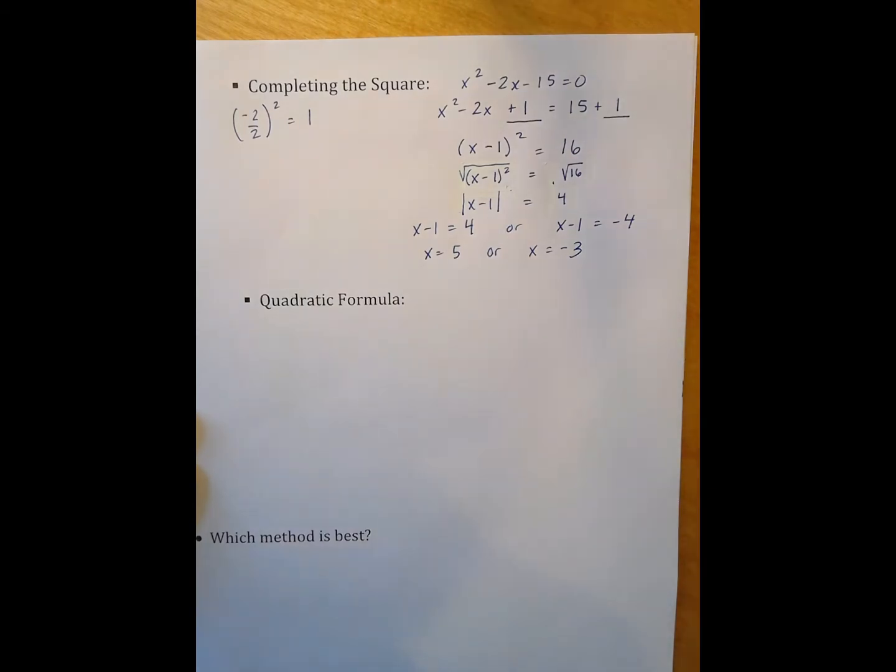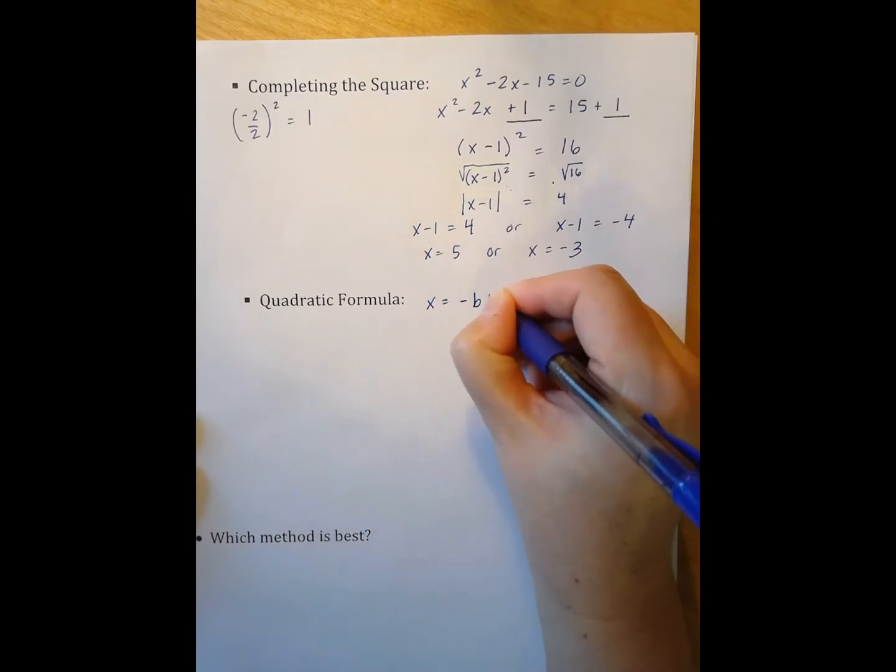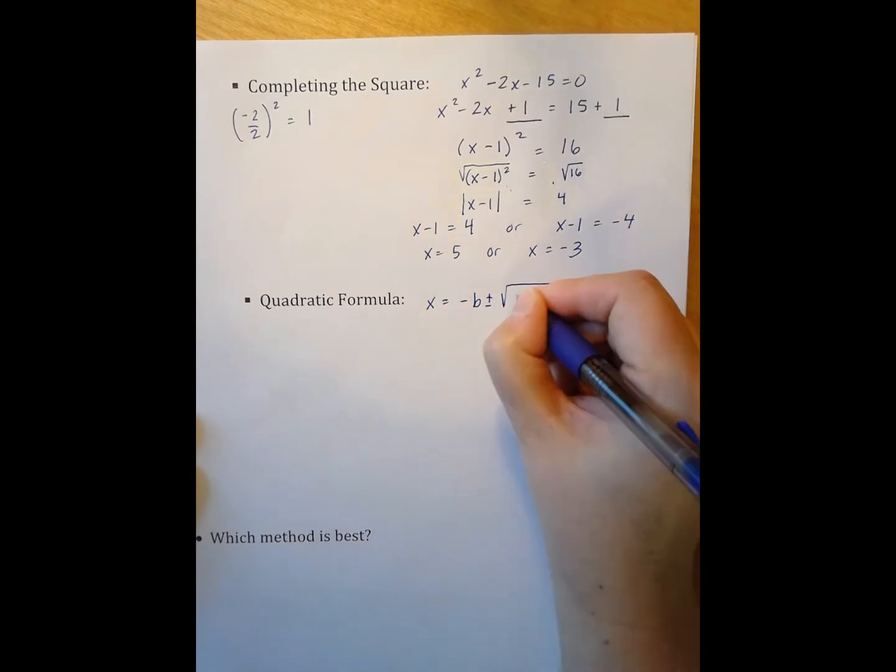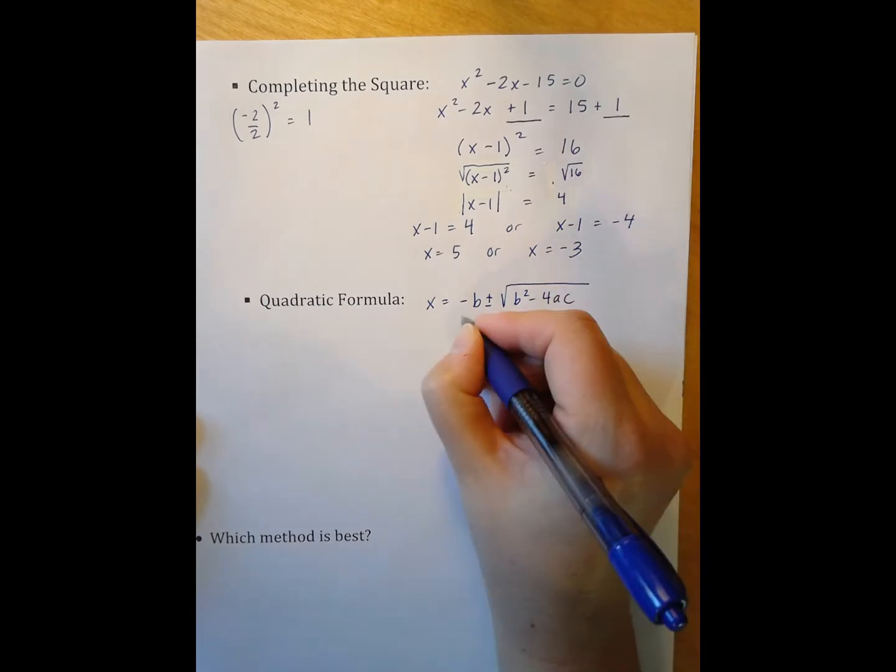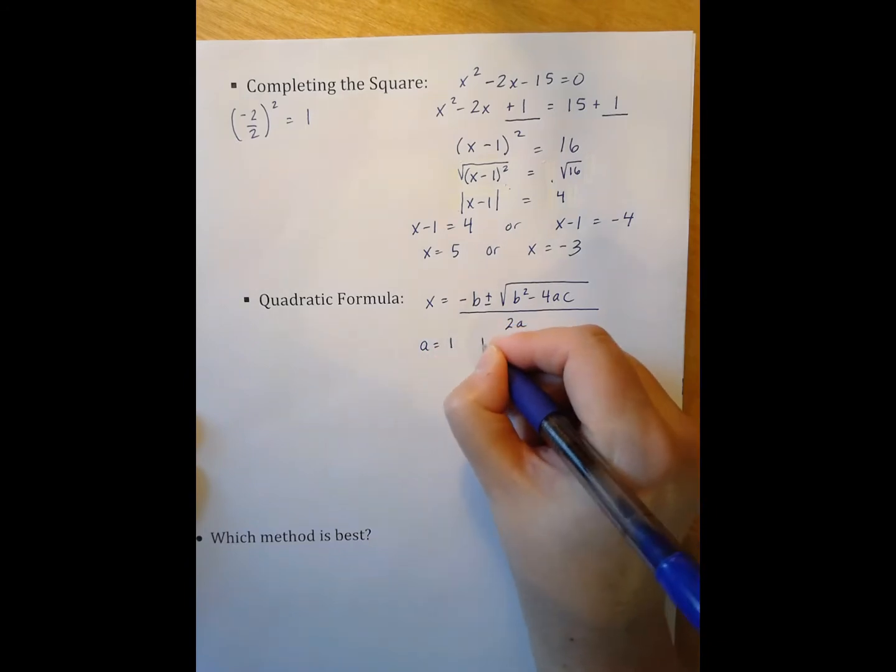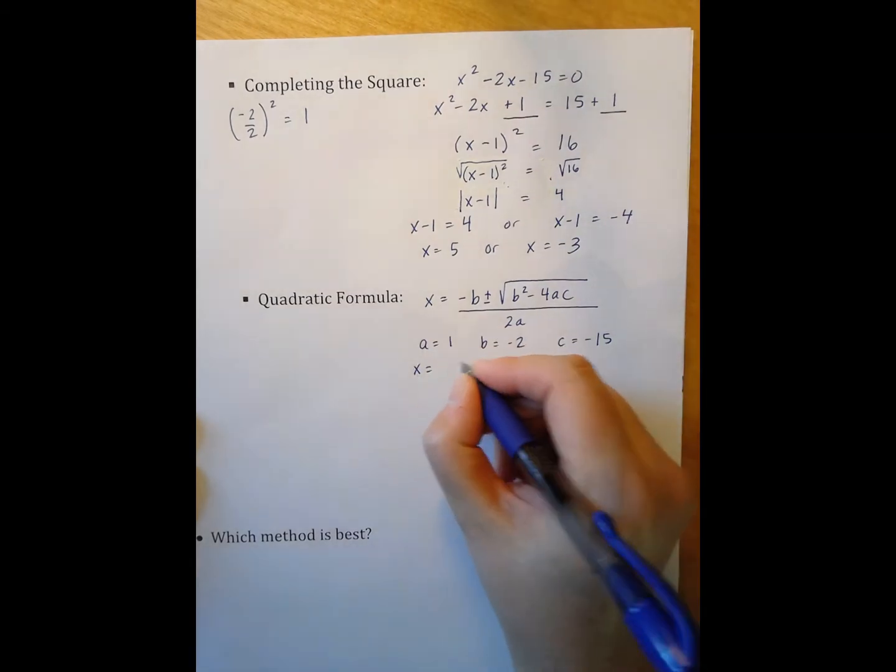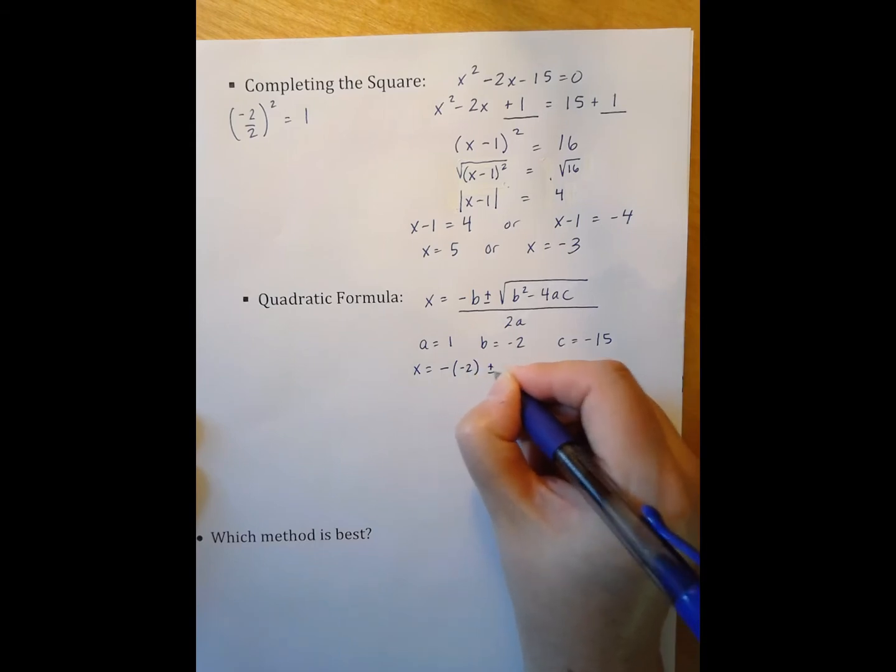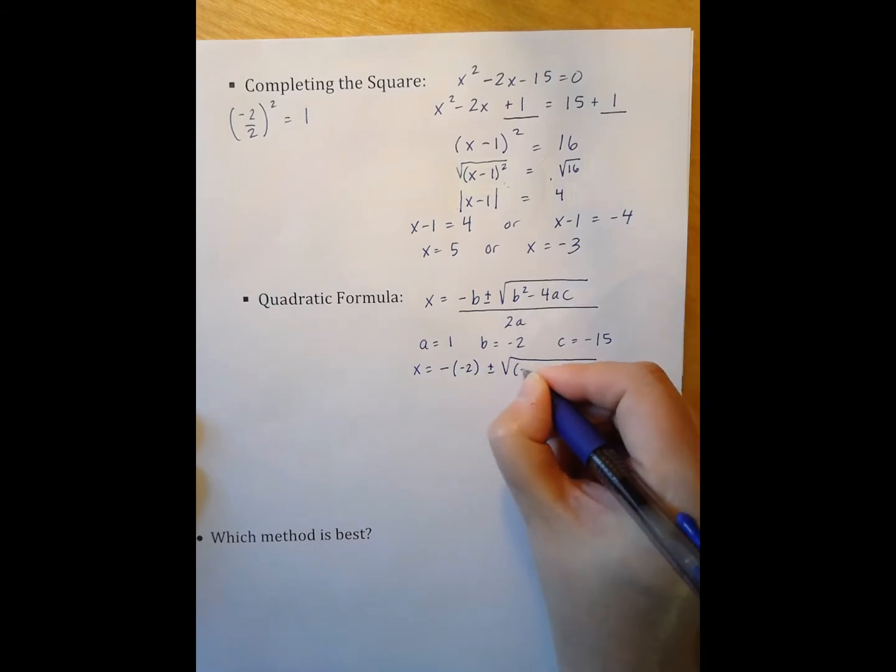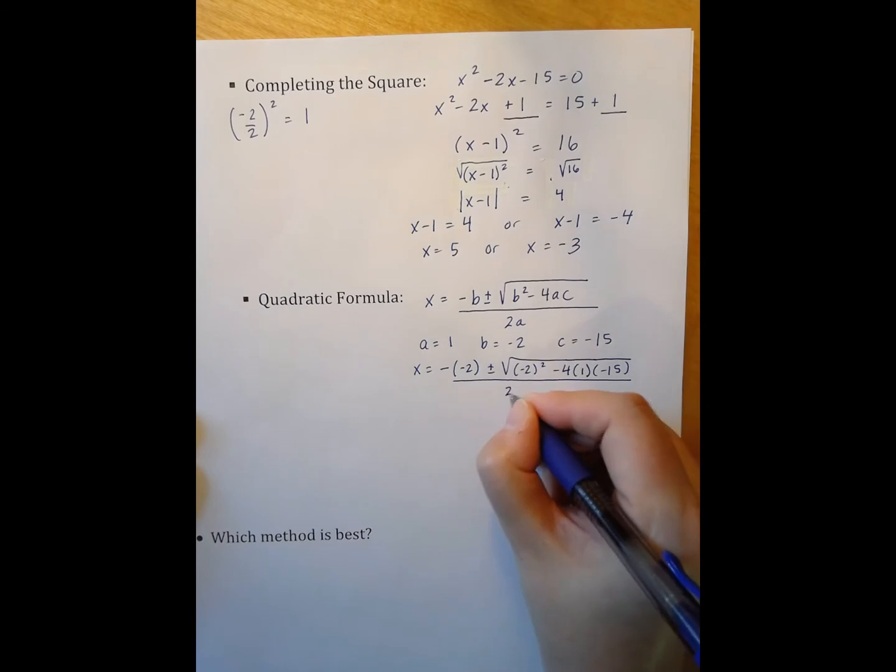The last of our five methods is quadratic formula. So I'm going to start by writing out the quadratic formula. x equals negative b plus or minus the square root of b squared minus 4ac all over 2a. My a is 1, my b is negative 2, and my c is negative 15. So I have x equals the negative of negative 2 plus or minus the square root of negative 2 squared minus 4ac all over 2a.